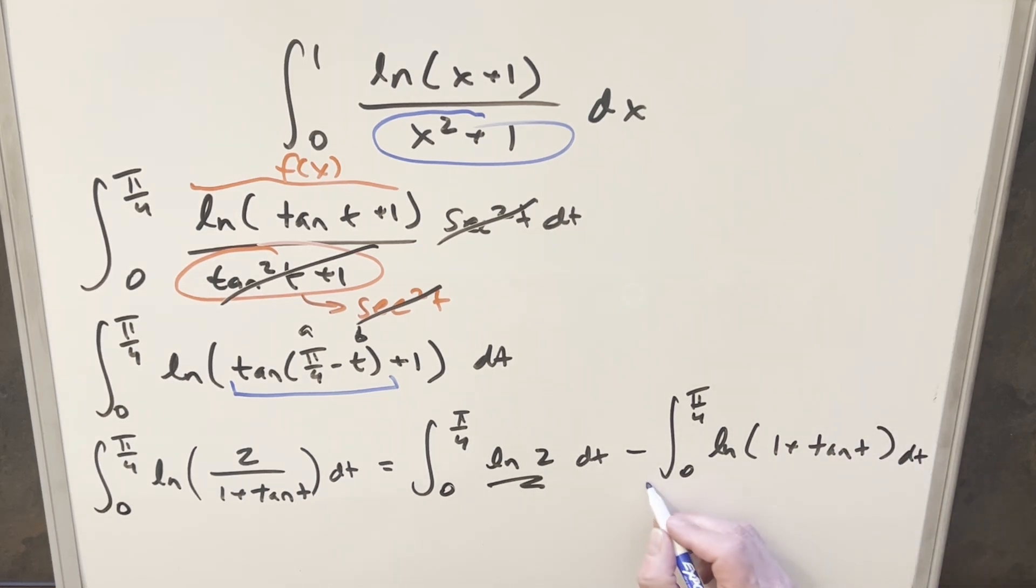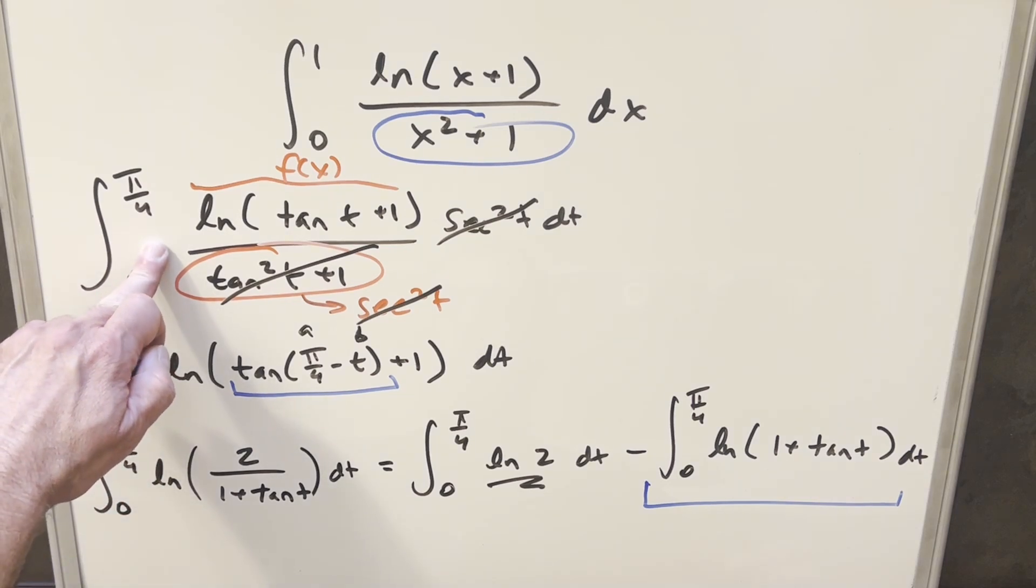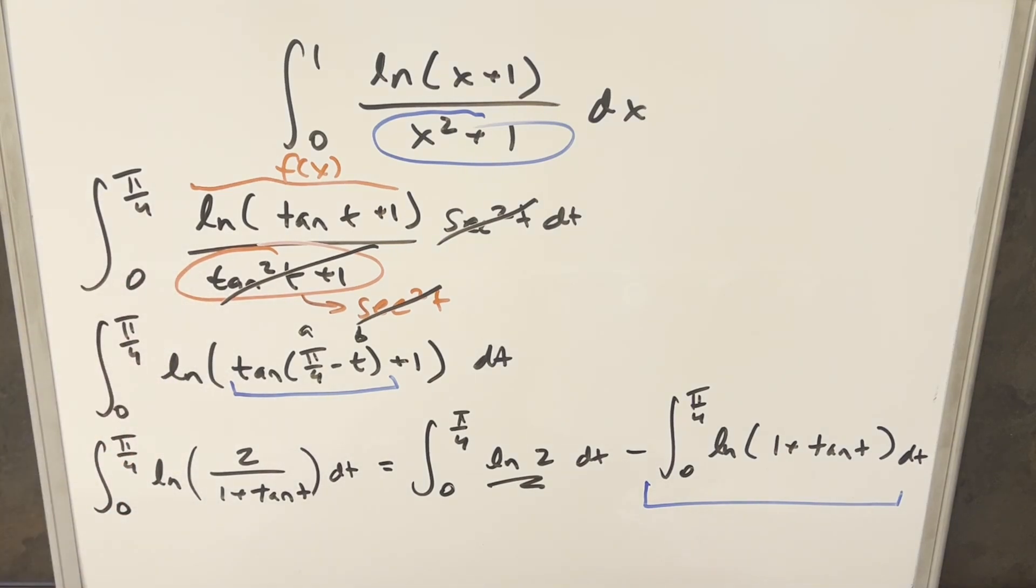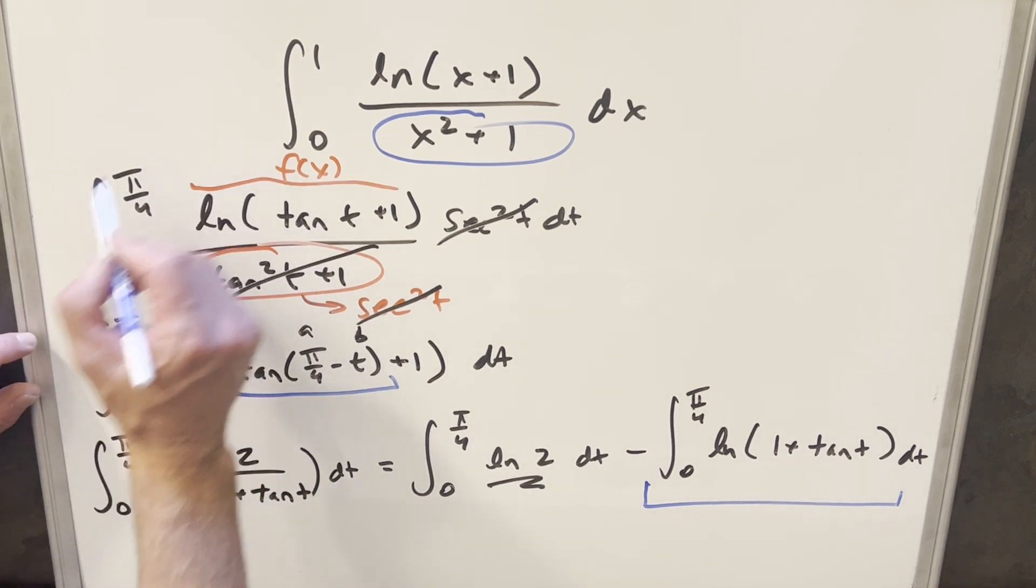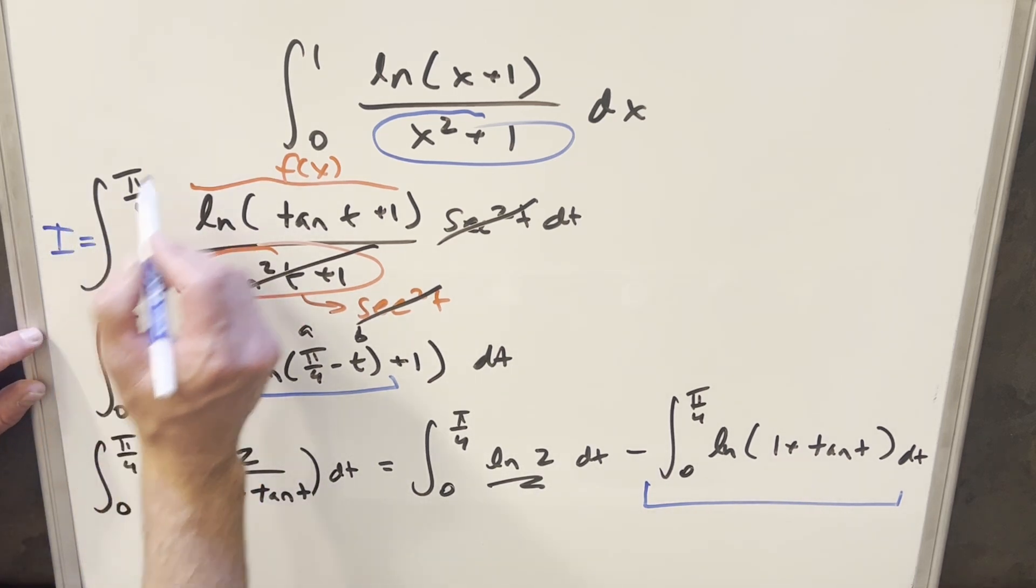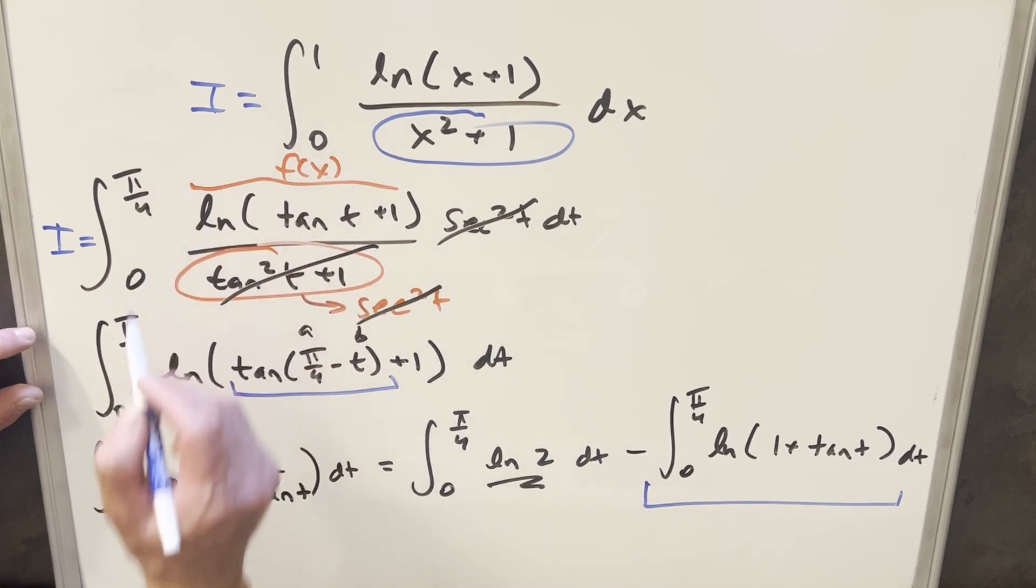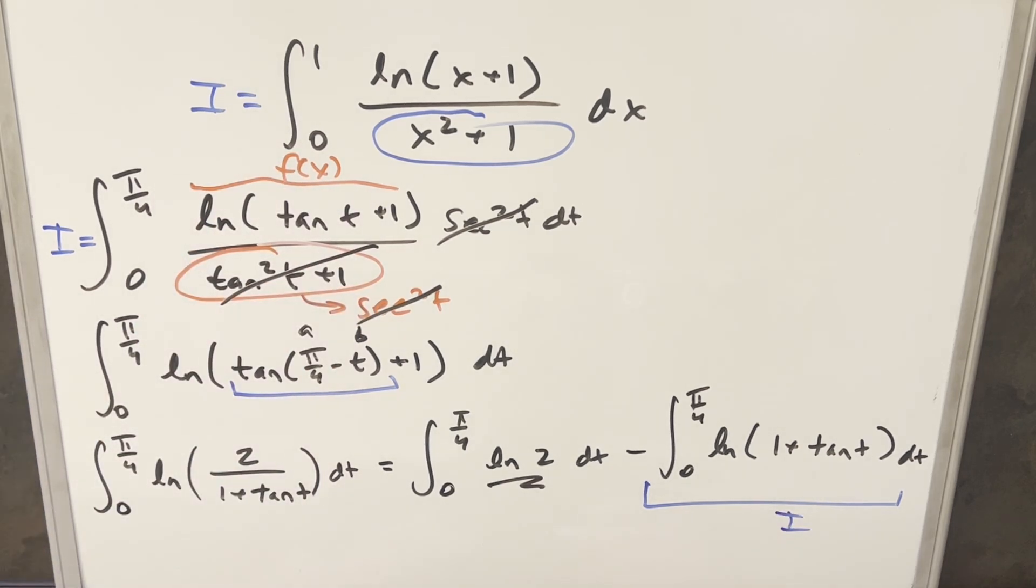Then for the second part, we're going to have a minus between the integrals, and this is just going to become natural log one plus tan of t. But this thing right here is good news because this is exactly the same as our original integral. We can label our original integral as I, but then this thing right here is also I.